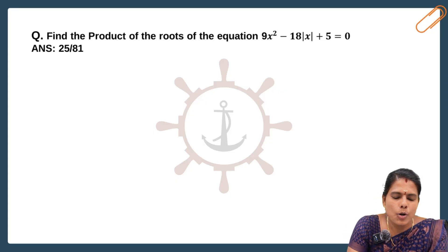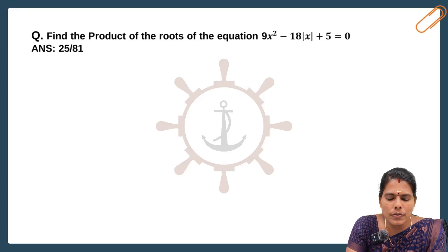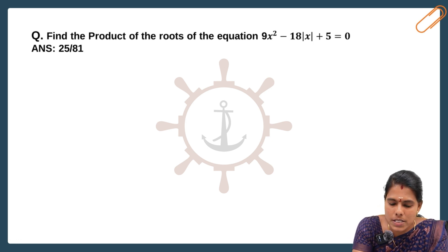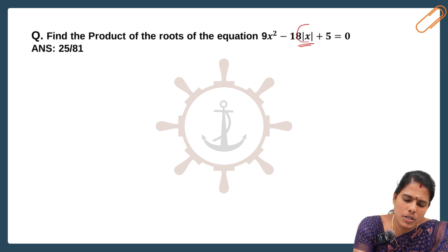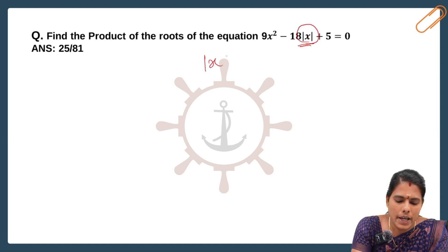Find the product of the roots of the equation 9x² - 18|x| + 5 = 0. So modulus x, what is the meaning? For modulus x, whether you take positive or negative, we have to consider only positive value. That is what modulus means.